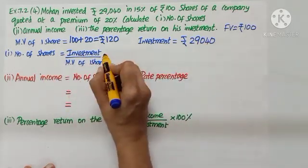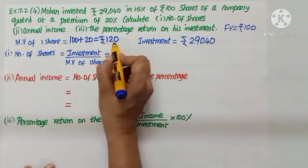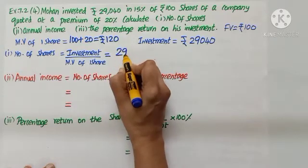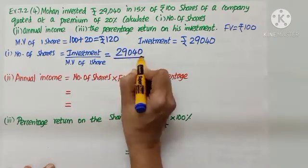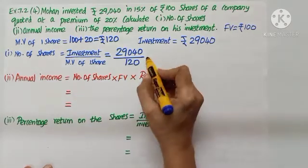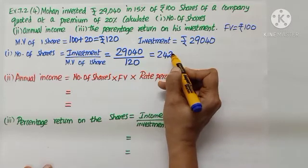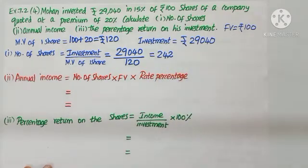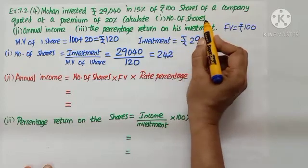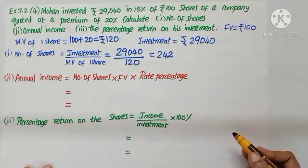How to find number of shares? Investment by market value of one share: 29,040 divided by 120 equals 242. So we have found out number of shares is 242.